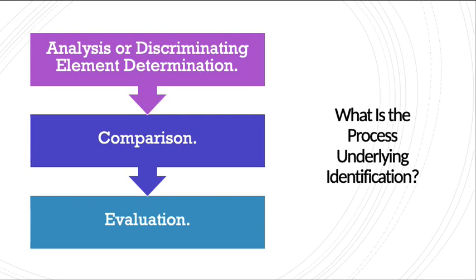The next step is Comparison. After we have observed and collected all the discriminating elements present in the unknown and known items, we try to compare the features and note in our logbook what the similarities and dissimilarities are. Then in the last step, Evaluation, we go through the similarities and dissimilarities, identify the likelihood of occurrence of each, and analyze the weightage of those features.